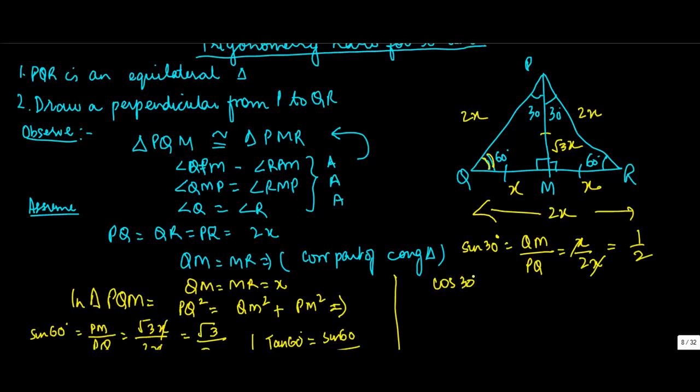Cos 30 degrees of this angle will be PM, under root 3X upon 2X, which is root 3 upon 2.